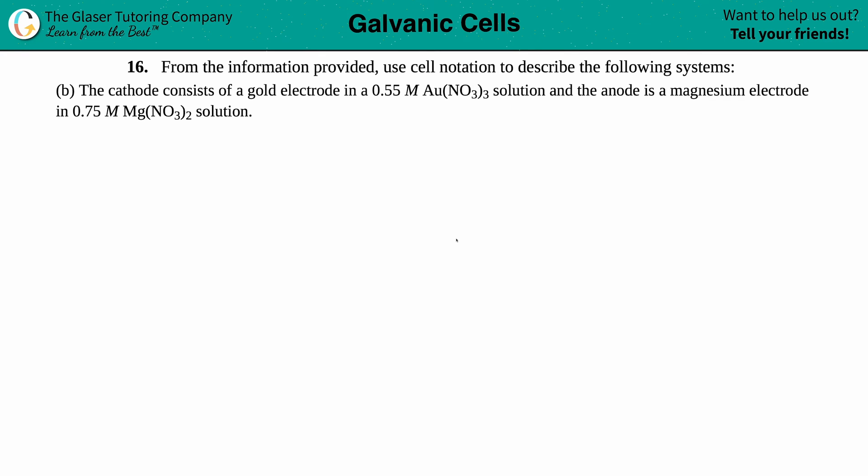Number 16. From the information provided, use cell notation to describe the following systems. In this case it says the cathode consists of a gold electrode in a 0.55 molarity Au(NO3)3 solution.